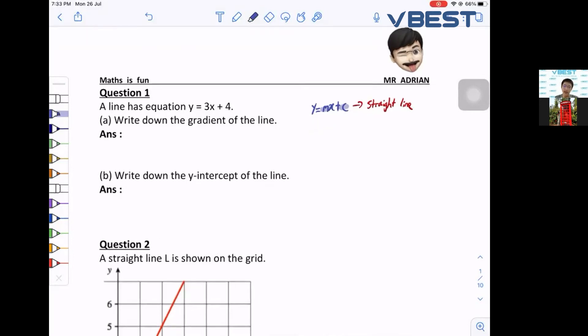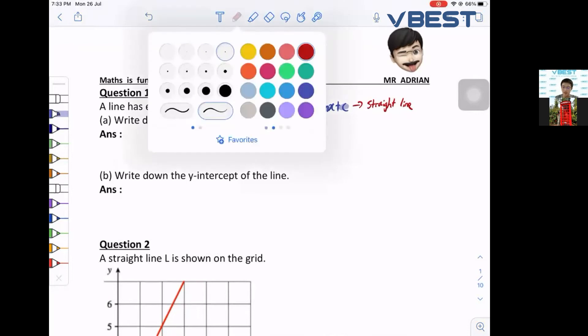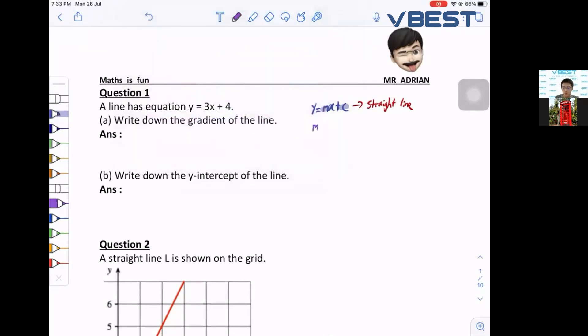What is your m? m in this chapter is your gradient. The formula for gradient is y2 minus y1 over x2 minus x1. You must write in order y2 minus y1 over x2 minus x1. This is the formula for your gradient.